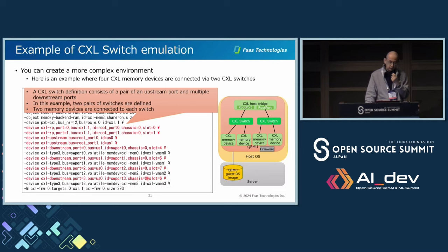The next example is CXL switch simulation. You can create a more complex environment. Here is an example where four CXL memory devices are connected via two CXL switches. A CXL switch definition consists of a pair of upstream port and multiple downstream ports. In this example, two pairs of switches are defined, along with two root ports, and two memory devices are connected to each switch.